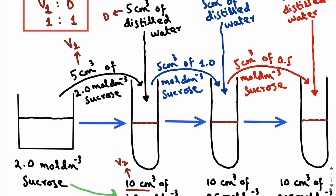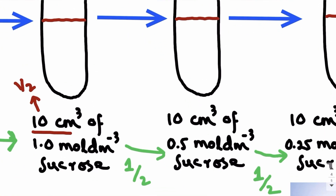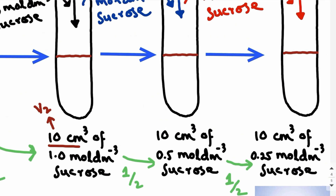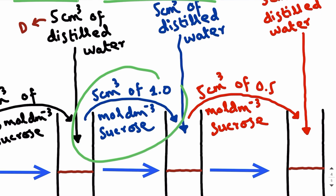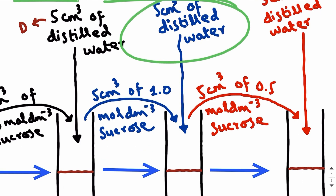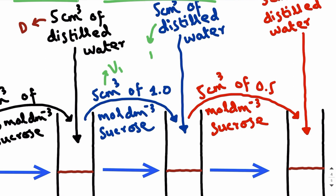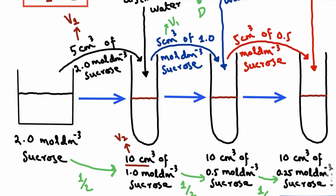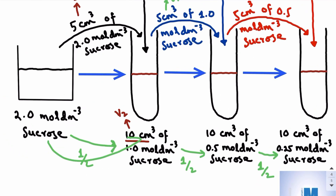We prepared 10 cm³ of 1.0 mole per dm³ sucrose by adding 5 cm³ of 2.0 mole per dm³ sucrose and 5 cm³ of distilled water. In the next step, to prepare 10 cm³ of 0.5 mole per dm³ sucrose, you add 5 cm³ of 1.0 mole per dm³ sucrose and 5 cm³ of distilled water. Note: you use the previously prepared solution — not the original stock — because you are carrying out dilutions in series.